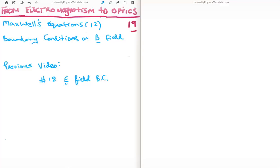Specifically, I'm going to discuss the boundary conditions on the magnetic field. The previous video to this, which is relevant, is number 18, where I discussed the boundary conditions on the electric field.